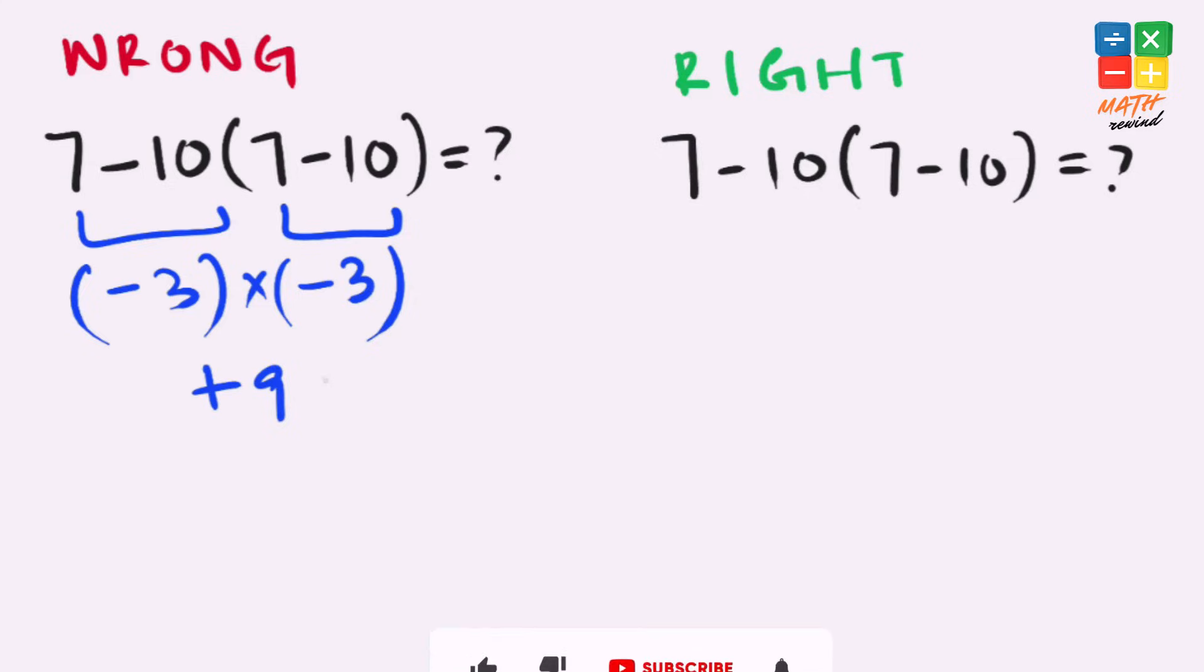But this answer is not correct because according to the order of operations we must solve parenthesis, then exponents, then multiplication and division, and finally addition and subtraction.